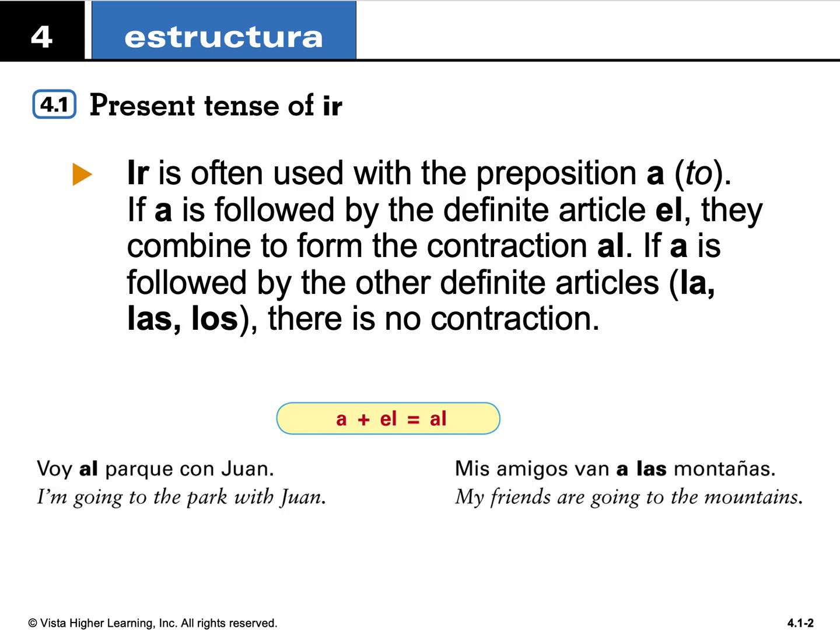Ir is often used with a preposition, which should make sense. In English, I would say 'I'm going to the store.' In Spanish, we use a, but if we are combining a with a masculine noun — for example, voy a el parque — it becomes voy al. So you have to be on the lookout for that a + el contraction. If it's feminine, it remains as a la or a las. Masculine plural follows the same pattern as the feminine — it does not become al.